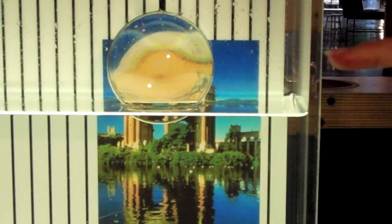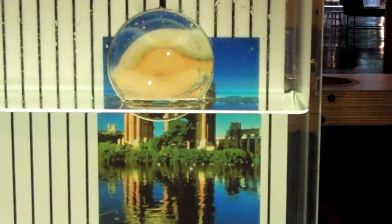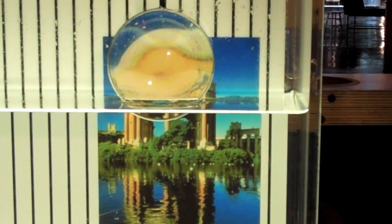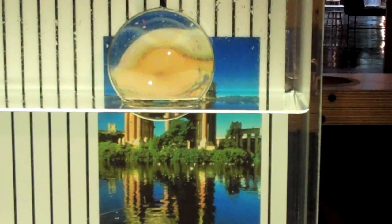Looking at a lens, the lens is focused or not very well focused on a picture behind it of the Palace of Fine Arts here at the Exploratorium. You can see that the lens is distorting that image as the light is going through the air, then through the glass of the lens, then back out into the air.